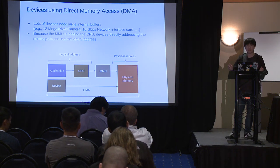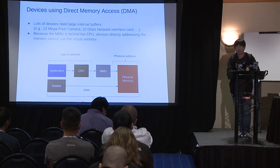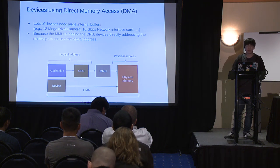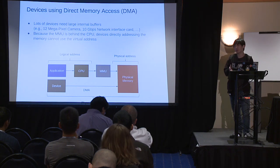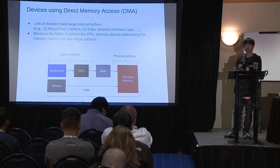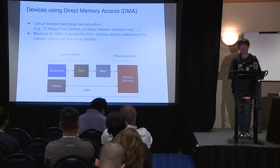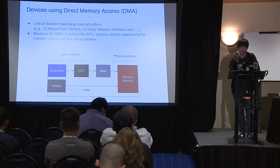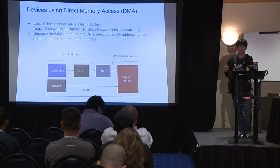For example, we can think of a 12-megapixel camera, a 10 Gbps network interface card, or a GPGPU. Because the MMU translates virtual address space to physical address space only behind the CPU, a device directly addressing memory without the CPU cannot use virtual addresses — there is no MMU to translate the device address space to physical memory address space.